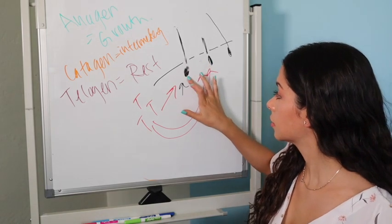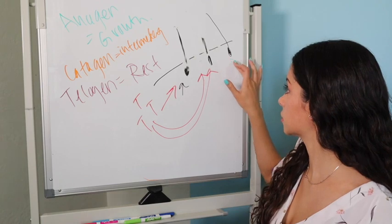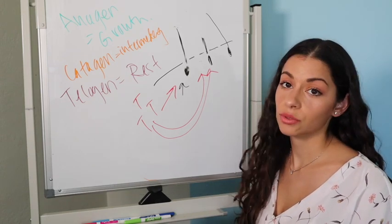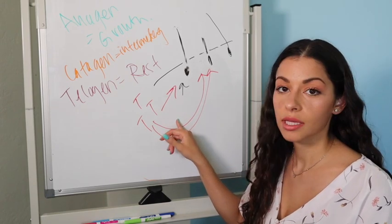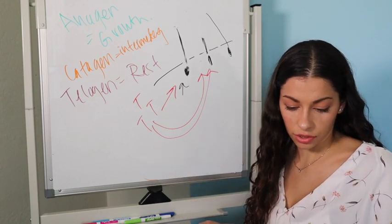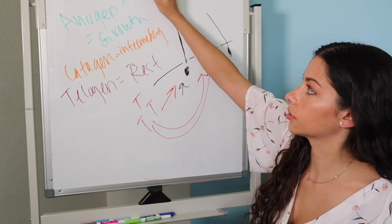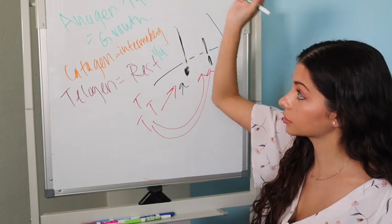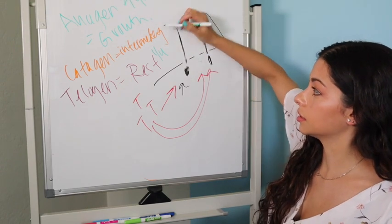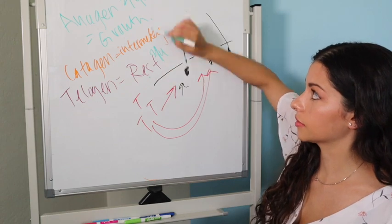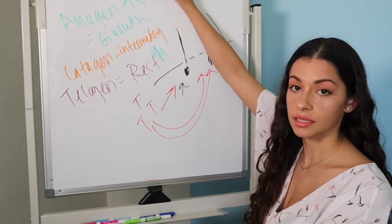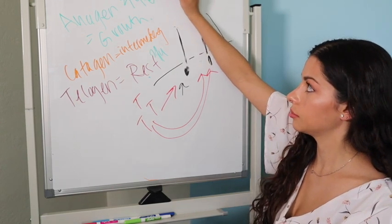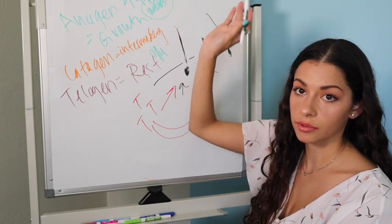That's your testosterone attacking the hair follicle — causing it to be a lot smaller. This is called follicular miniaturization; it is exactly like it sounds. Also, this testosterone attacking the hair follicle is going to make your hair switch from three-fourths being in the growth phase to maybe only one-fourth in growth. It significantly decreases the anagen phase from potentially years of growth down to maybe weeks, so your hair basically stops growing altogether.